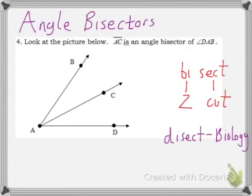Here we have ray AC is an angle bisector of angle DAB. That means that it's cut in half. So, let's just say that the whole thing was 60 degrees. That would tell us that this part is 30 and that part is 30.